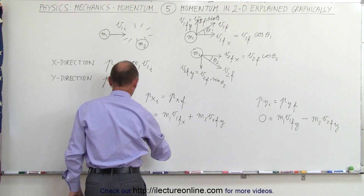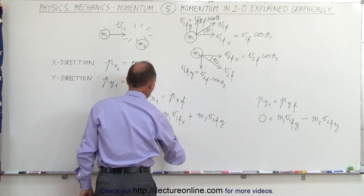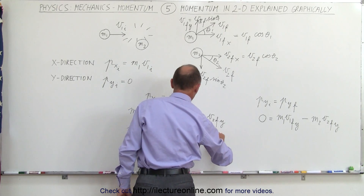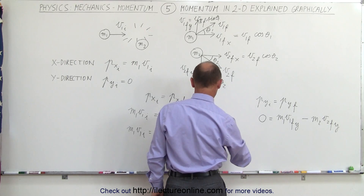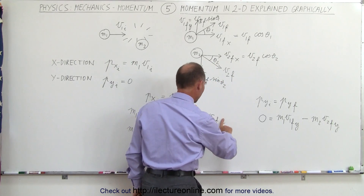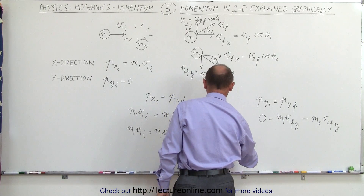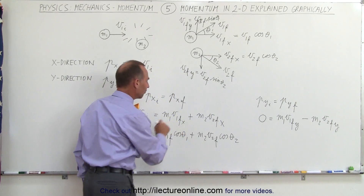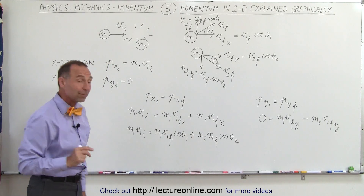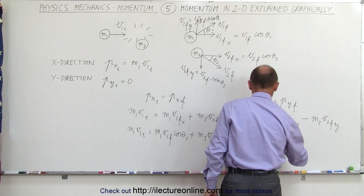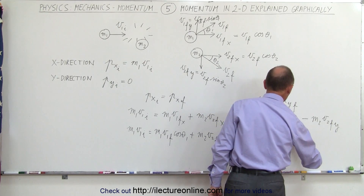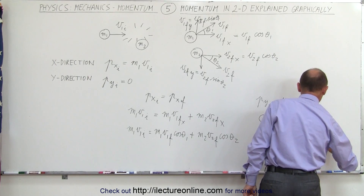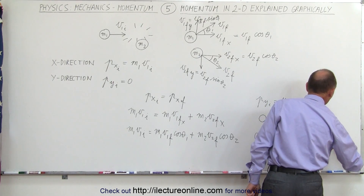So the full x-direction equation becomes: m1 v1 initial equals m1 v1 final times the cosine of theta 1, plus m2 v2 final times the cosine of theta sub 2. And for the y-direction: 0 equals m1 v1 final times the sine of theta 1, minus m2 times v2 final times the sine of theta sub 2.